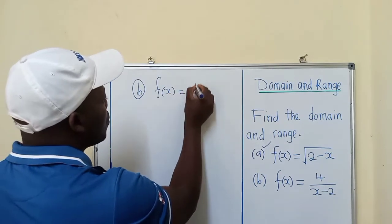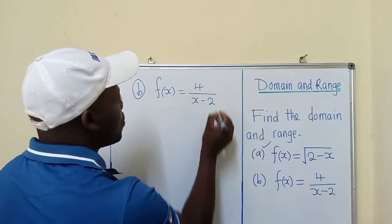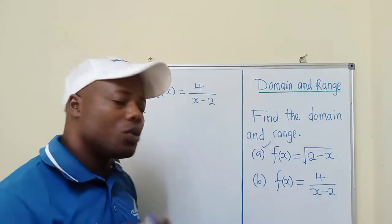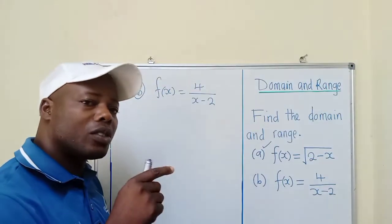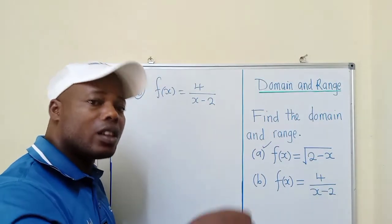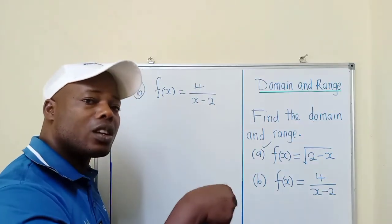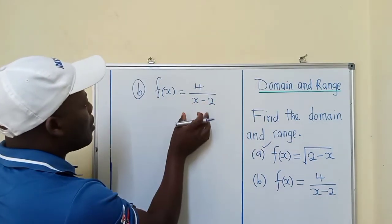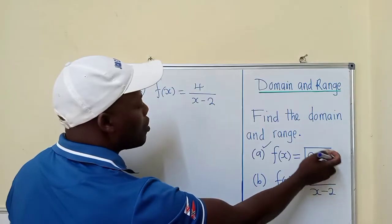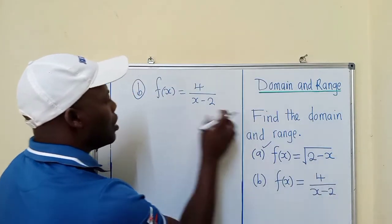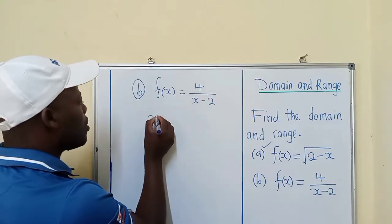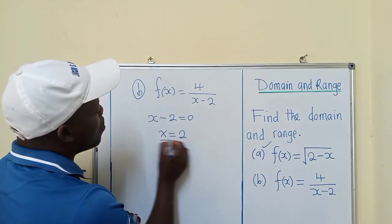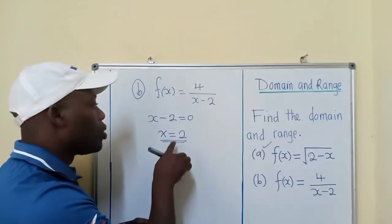The function is f(x) = 4 / (x - 2). We need to find the domain and range. Let's start with the domain. If you watched the previous video, whose link is in the description, you'll remember we equated the denominator to zero to solve for x. So here, we say x - 2 = 0, and when we solve, x = 2.